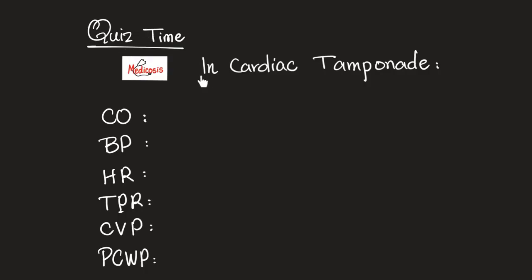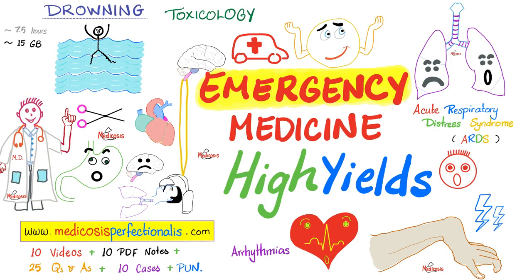Quiz time: in patients with cardiac tamponade, what happens to cardiac output, blood pressure, heart rate, total peripheral resistance, central venous pressure, and pulmonary capillary wedge pressure? Let me know your answers in the comments — you'll find the answer key in my video titled 'Cardiac Tamponade.'